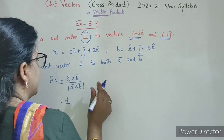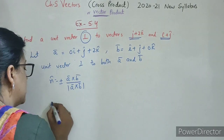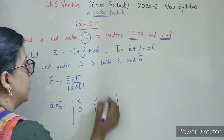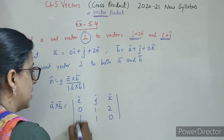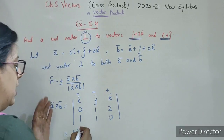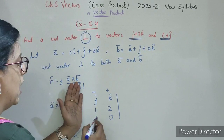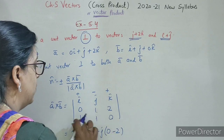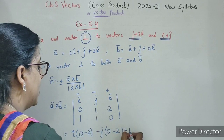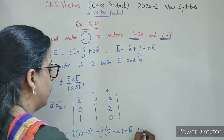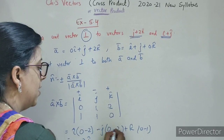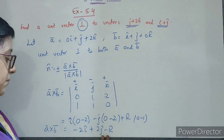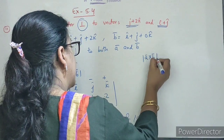A cross B: determinant with first row î, ĵ, k̂; second row 0, 1, 2; third row 1, 1, 0. Solving: î(0 − 2) − ĵ(0 − 2) + k̂(0 − 1) = −2î + 2ĵ − k̂. This is A cross B. Ab hum nikalenge magnitude of A cross B: root of (−2)² + 2² + (−1)² = root of (4 + 4 + 1) = root 9.